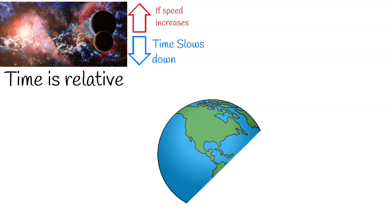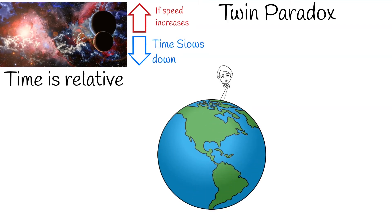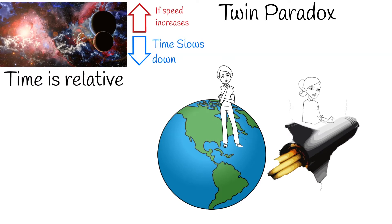Time passes for everyone but it is relative. For example, if you travel near speed of light, your time is almost stopped for other observers. In physics, it is known as the twin paradox.